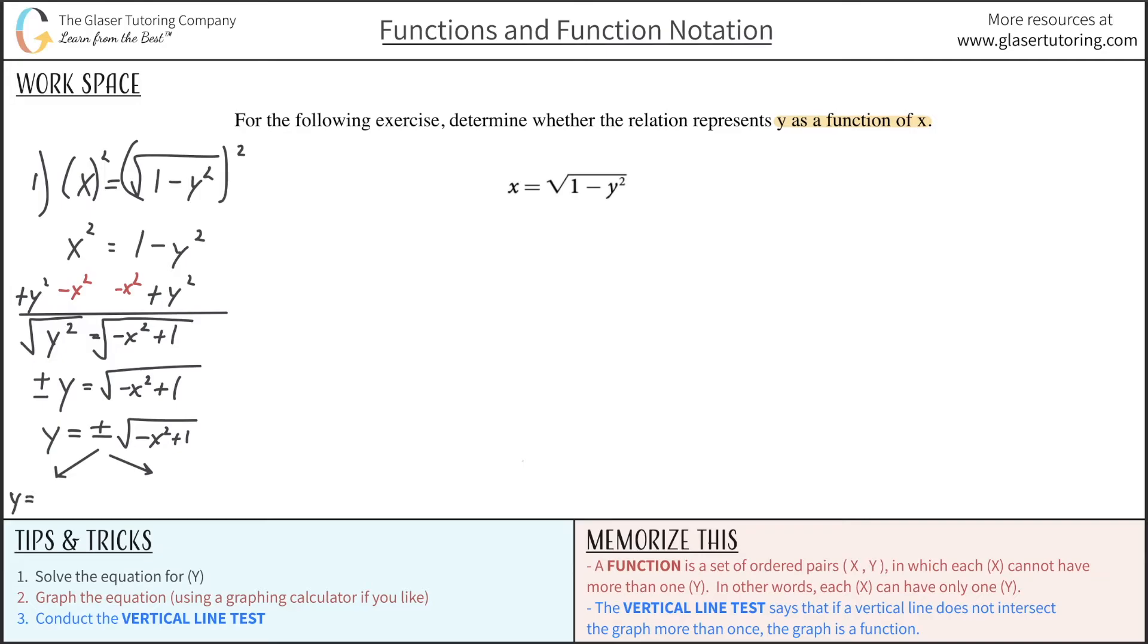So if we now break this up into the positive answer, so it's going to be square root of negative x squared plus 1, and we break it up into the negative answer, meaning y is equal to negative square root of negative x squared plus 1. Now what we do is we graph these two things in the calculator. We plug them in as basically two separate functions.